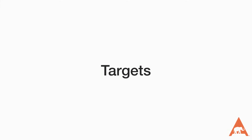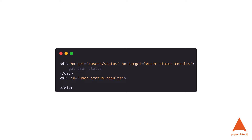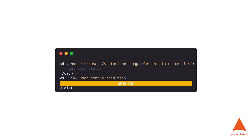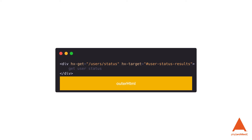If we don't want to replace the contents of the same div, we can use the hx-target attribute to define where the content should be placed after it's been retrieved. We can also use the hx-swap attribute to define how the retrieved data will be placed in relation to the target element. The default is innerHTML, which will replace the inside of the target element, or outerHTML, which will replace the entire target element with the retrieved data.